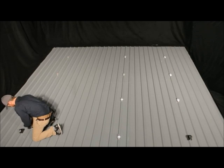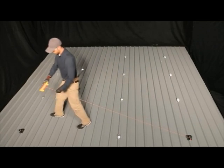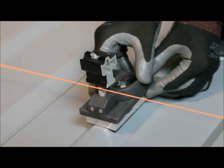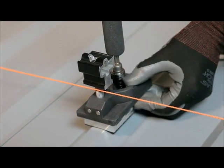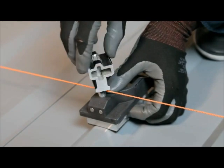Install the eastmost and westmost leveling feet first, and then run a string line between them. Install the remaining front row leveling feet using the string line to ensure that the front row is straight and the pockets on top of the leveling feet are level.